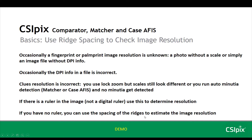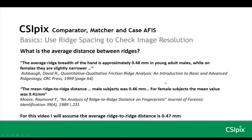If there is no ruler in the image, you can use the spacing of the ridges to estimate the image resolution. To do this, we need to know the average distance between ridges. The first reference is from a book by David Ashbaugh, who says the average ridge breadth is 0.48 millimeters in young adult males, while females are slightly narrower. A paper by Raymond T. Moore from the Journal of Forensic Identification in 1989 found a mean ridge-to-ridge distance of 0.46 millimeters for males and 0.41 millimeters for females, based on measuring fingerprints of 10 males and 10 females. For this video, I'll assume the average ridge-to-ridge distance is 0.47 millimeters.